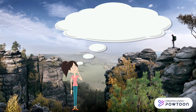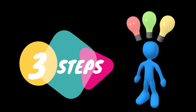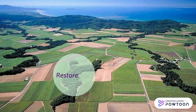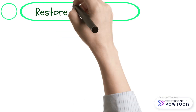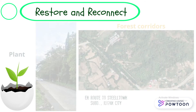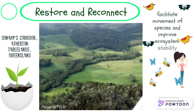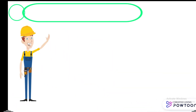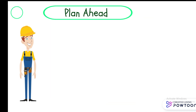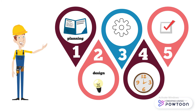So what can we do? We can help restore and reconnect the forest fragments together by planting forest corridors and forest bridges, which would facilitate movement of species and improve ecosystem stability. Another way to protect and conserve our remaining forest is by planning ahead. Avoidance of vulnerable habitats or forest fragmentation can be included in the planning, design, construction, maintenance, and monitoring phases of a proposed infrastructure or land use change.